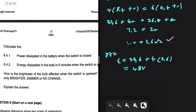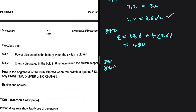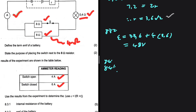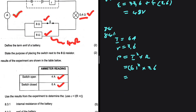Let's do 8.4.1: calculate the power dissipated in the battery when the switch is closed. When the switch is closed, the current is 6 amps and the internal resistance is 3.6 ohm. We use P = I² × r. We choose this formula because we already have both variables. So: P = 6² × 3.6 = 36 × 3.6 = 129.6 watts.